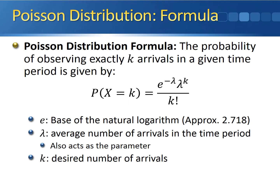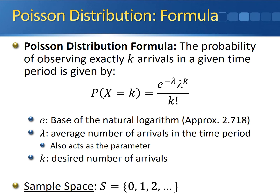The sample space for the Poisson distribution is a little bit different than the binomial. In the binomial distribution, you were limited to seeing zero successes up to n successes, because you were only running n trials. In the Poisson distribution, your sample space is actually all non-negative integers. You can witness zero arrivals, one arrival, two arrivals, and so on. You're not limited in the number of arrivals you can see — it's potentially unlimited, so your upper bound doesn't exist.